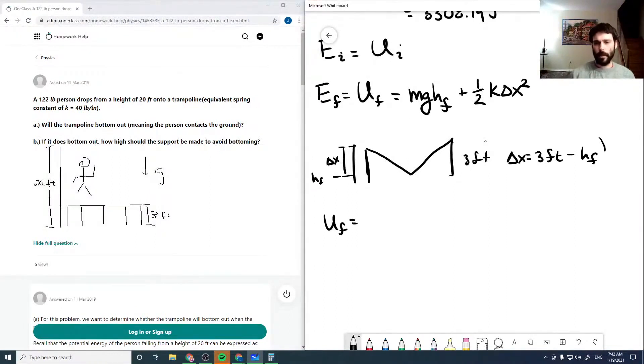So then our final potential energy is mg hf plus one half k, 3 feet minus our hf, squared. And just to do some conversions there, so 3 feet times 0.3048 meters per foot comes out to be 0.9144 meters.